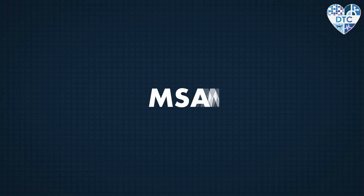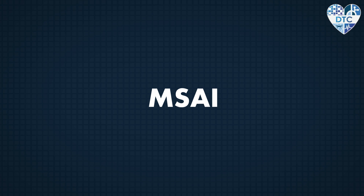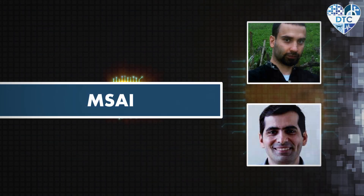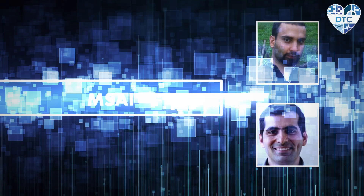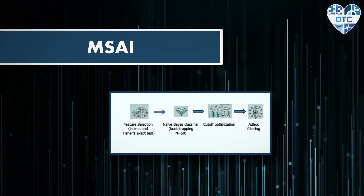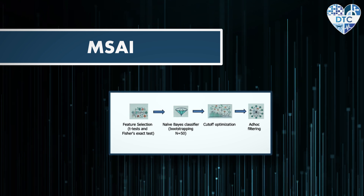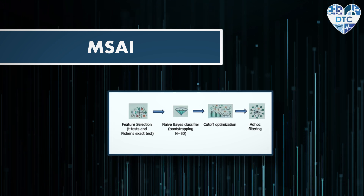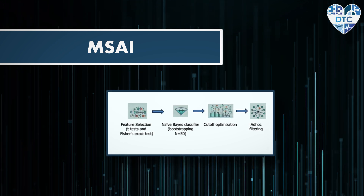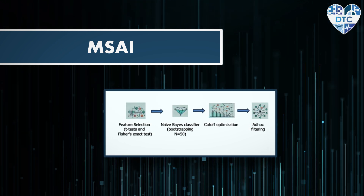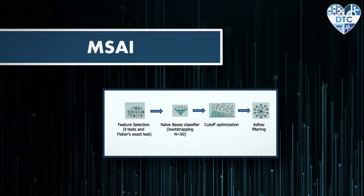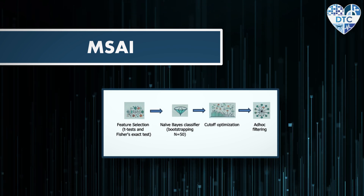Team MSAI applied statistical methods and machine learning to predict LSIs in a dataset with imbalanced classes. They addressed the imbalance by implementing a rule to predict the dominant class and optimize the process for faster execution.